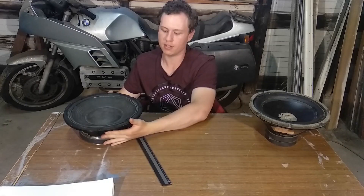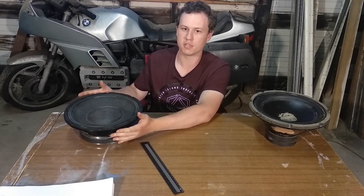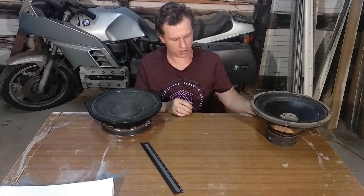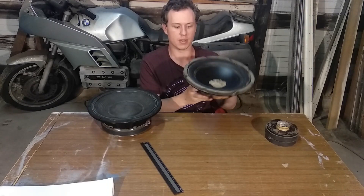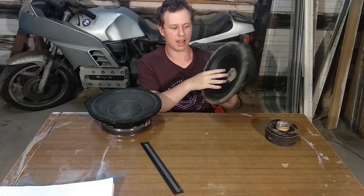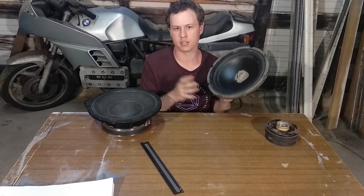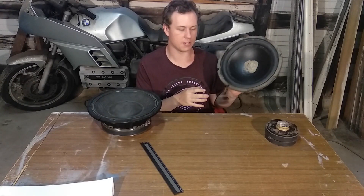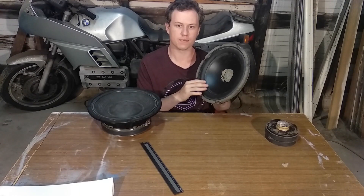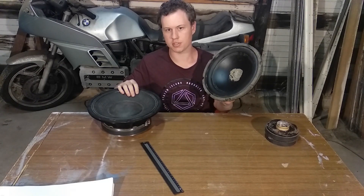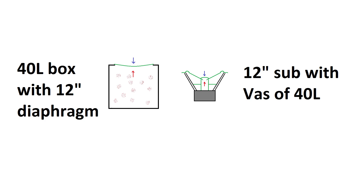Next is VAS — the equivalent volume of air equivalent to the suspension. The suspension here is the spider and to a certain extent the surround. It's a factor based on the surface area of the driver and how stiff the suspension is. Very stiff suspensions lead to a small VAS; very small cones also lead to a small VAS. This softer driver has a VAS of around 120 litres, whereas the stiffer PA driver has a VAS of around 40 litres, even though they're the same cone area.